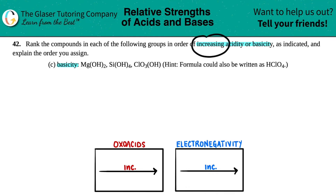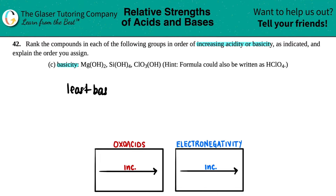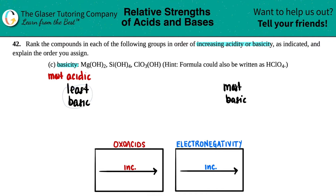We need to go via increasing basicity, so from least basic to most basic. Sometimes doing a trend off of basicity is a little hard — it's always easier to think in terms of acidity and then translate. If you're the least basic, that basically means you are the most acidic. So least basic means most acidic, and most basic means least acidic.